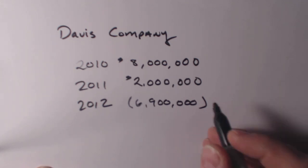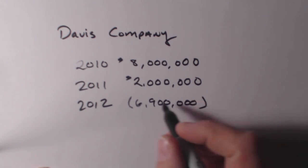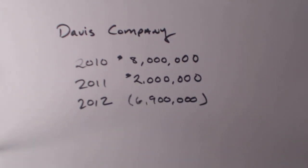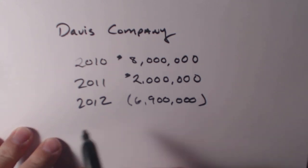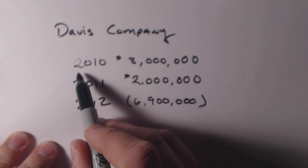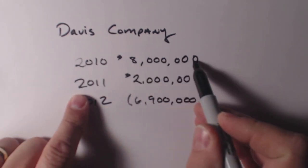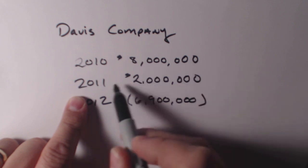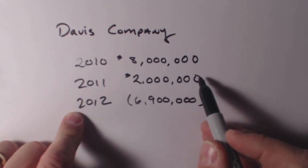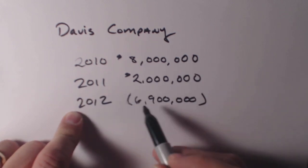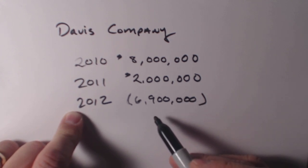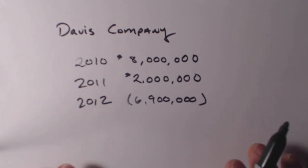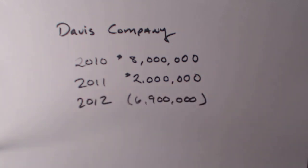In this video we're going to be looking at taxes and when a company takes a loss, what they can do for payback periods and how they can take the tax and apply it forward or backward as a loss. We're going to take a look at the Davis Company. The Davis Company in 2010 made $8 million in profit, in 2011 they made $2 million in profit, and then in 2012 they took a loss of $6,900,000. This was their profit and loss statement for those three years.